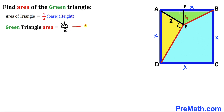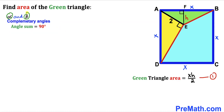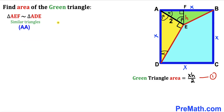Let me label this as equation number one. Our task is to find the value of x and h. Let's assume that alpha and beta are two complementary angles — their sum equals 90 degrees. This angle is alpha, this is a 90 degree angle, so the remaining angle is beta. In right triangle AEF, this angle is alpha, this is 90 degrees, so this angle is beta. Therefore right triangle AEF is similar to right triangle ADE by the angle-angle similarity theorem.